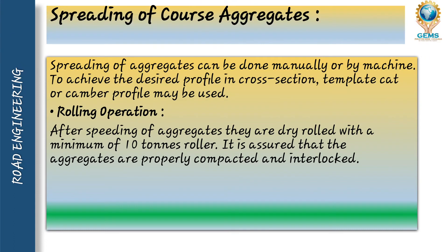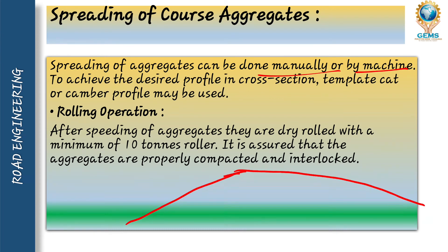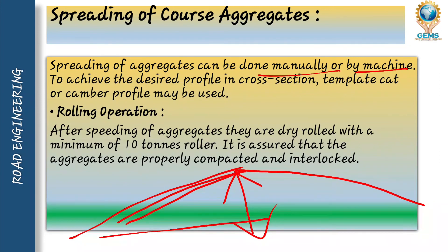Second step: spreading of coarse aggregate. Spreading of coarse aggregate can be done manually or by machine to achieve a desired profile in cross-section; a template or camber profile may be used. The height of the cross-section will indicate the camber of the road, forming a triangular profile.